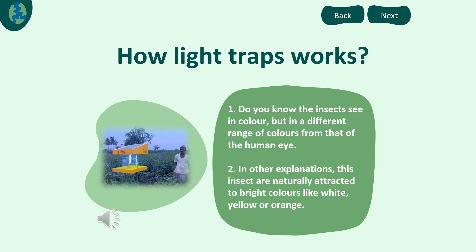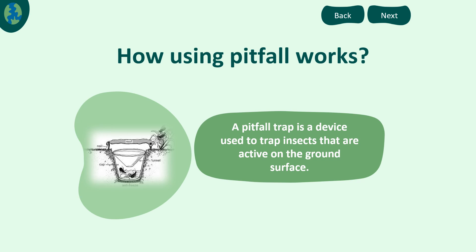How do light traps work? Insects see in color but in a different range of color from that of the human eye. These insects are naturally attracted to bright colors like white, yellow, and orange. And how does a pitfall trap work?